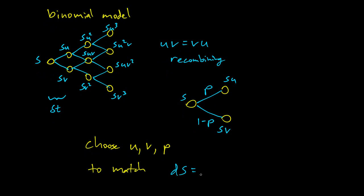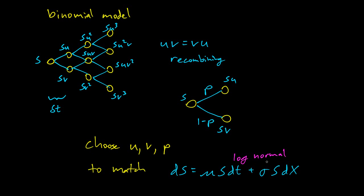What was that? ds equals mu s dt plus sigma s dx — that's log normal, just a reminder. So how do we choose u, v, and p to match log normal stock behavior? This is not going to be an exact match. This is a discrete time model and the log normal is continuous time, but we want the limit as our delta t goes to zero to match log normal behavior.